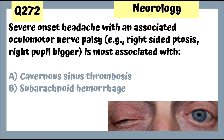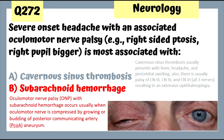Question 272: Severe onset headache with associated oculomotor nerve palsy is most associated with subarachnoid hemorrhage. The hemorrhage can lead to oculomotor nerve palsy. Cavernous sinus thrombosis usually presents with fever, headache, and periorbital swelling, affecting cranial nerves 3, 4, and 6, leading to extensive ophthalmoplegia.